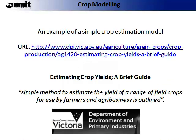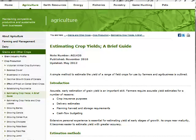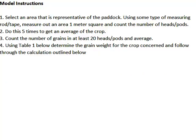Now I'm going to talk through how to use a simple model of crop estimation. This simple model was developed by DPI Victoria. Instructions on the model can be found on the website URL link presented, and also on Moodle. Please stop the lecture now and read through 'Estimating Crop Yields: a brief guide' developed by DPI. Also refer to the Simple Model Excel Sheet on Moodle for an electronic copy of this spreadsheet.